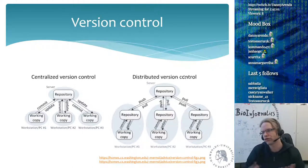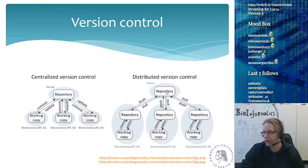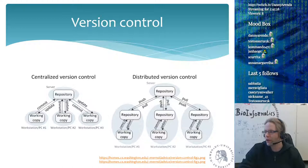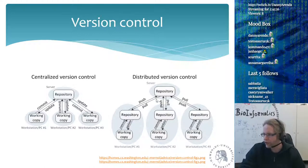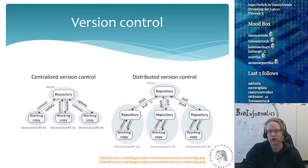Distributed version control is more modern. You still have a central server repository, but instead of just a working copy you also get your own local copy of the repository. You can commit and update locally, and only when a feature is complete do you push to the central repository. Everyone has their own repository and working copy, so there's no single entry of truth — everyone's repository can diverge over time, and by pushing and pulling you synchronize with the central repository.